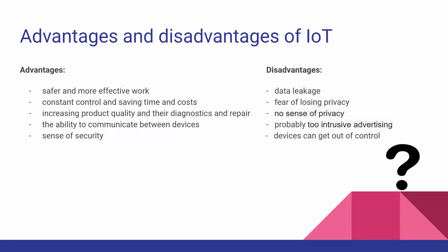In advantages, we have safer and more effective work, constant control and saving time and costs, increasing product quality and easier diagnostics and repair, the ability to communicate between devices, and a sense of security. In disadvantages, we have data leakage, fear of losing privacy, probably no real sense of privacy, potentially intrusive advertising, and also devices can get out of control — for example, the toaster might try to kill you, something like that.